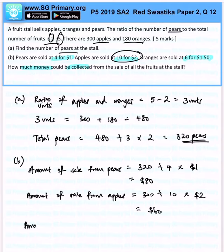Amount of sale from oranges. There will be 180 divided by sets of 6 times $1.50, and that will give me $45.